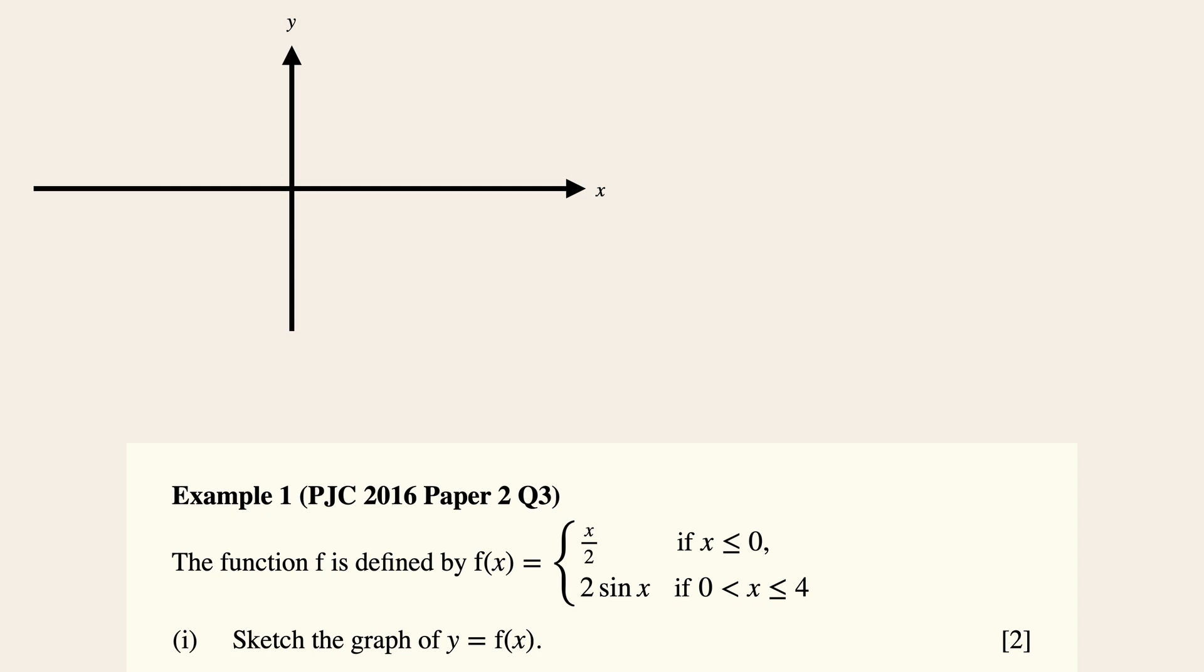Another clue we could look at will be the function itself. Now observe that in the first part, we have x over 2 if x is less than equals to 0. So this gives us an idea that the graph lies somewhere along the x negative region, and this is also a linear function. So we can easily sketch the graph as a straight line in the negative region of the x axis, up to the point where x is equals to 0.